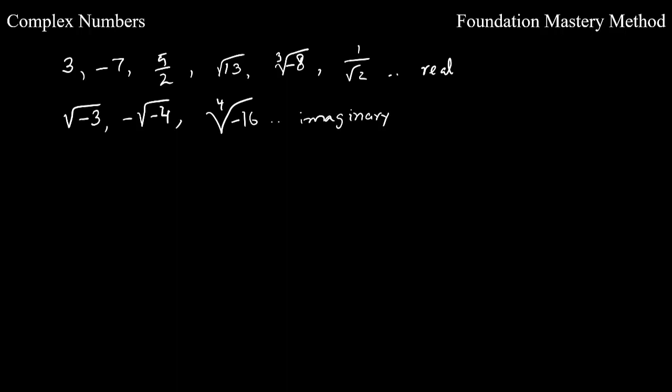In this section we'll be working with complex numbers. We'll talk about four operations: addition, subtraction, multiplication, and division. Let's look at what a complex number is. Take a few examples — the first set: 3, negative 7, 5 over 2, square root of 13, cube root of negative 8, 1 over the square root of 2 — all these are real numbers.